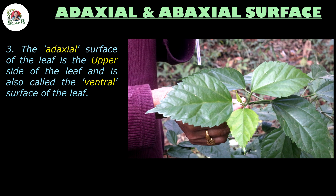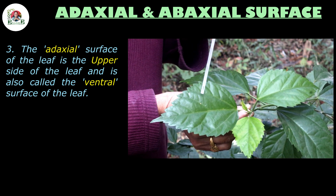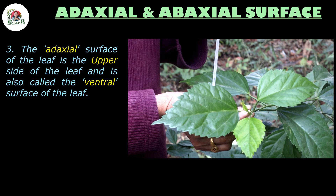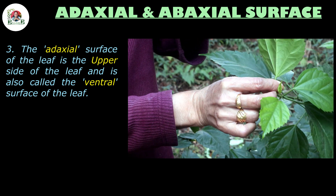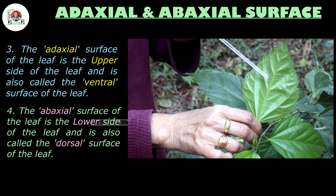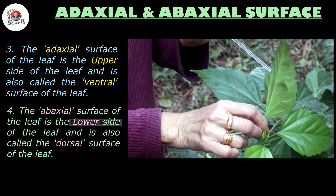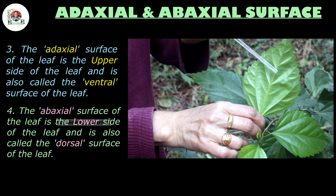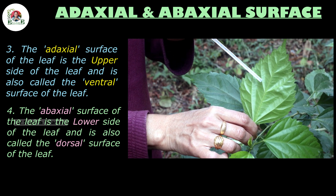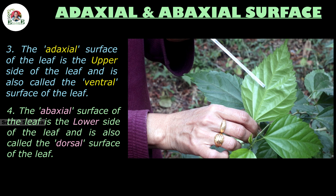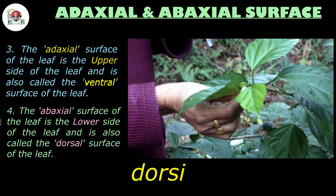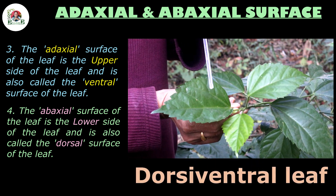The upper side is also known as the ventral surface of the leaf. The abaxial surface corresponds to the lower side of the leaf, and the lower side is called the dorsal surface of the leaf. Such leaves are termed as dorsiventral leaves.